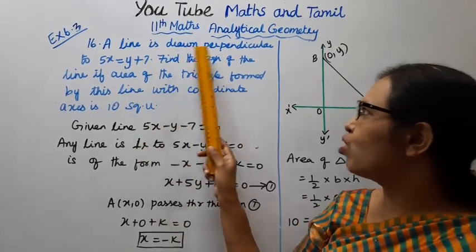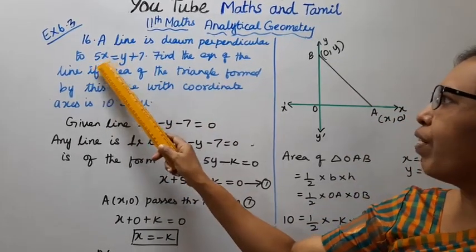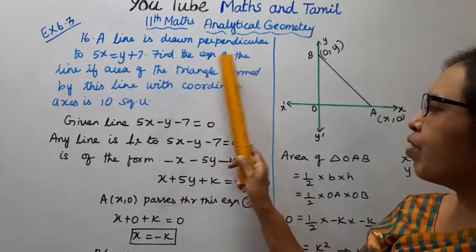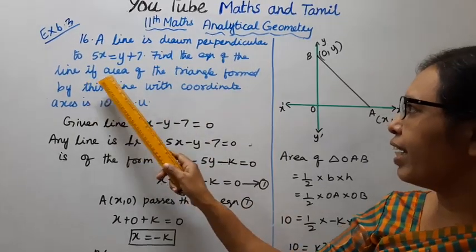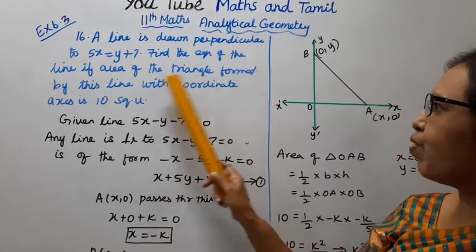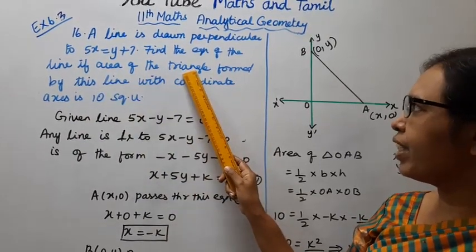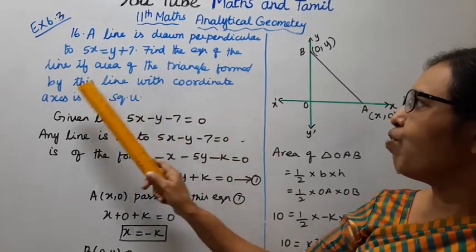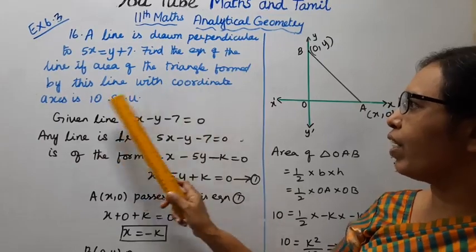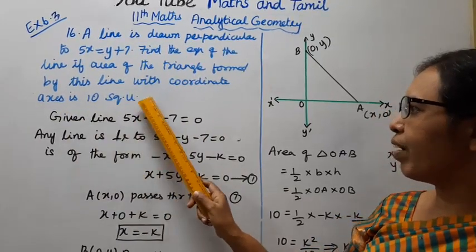A line is drawn perpendicular to 5x = y + 7. Find the equation of the line if the area of the triangle formed by this line with the coordinate axes is 10 square units.